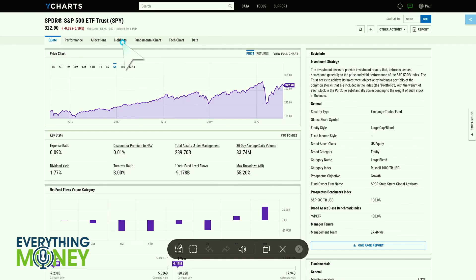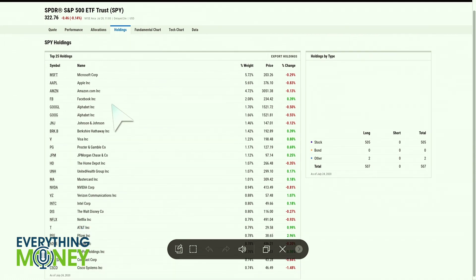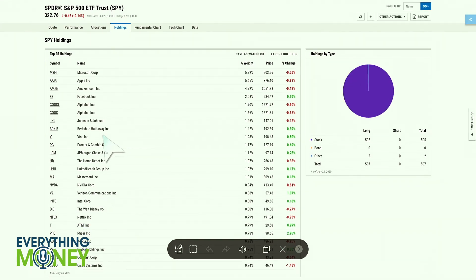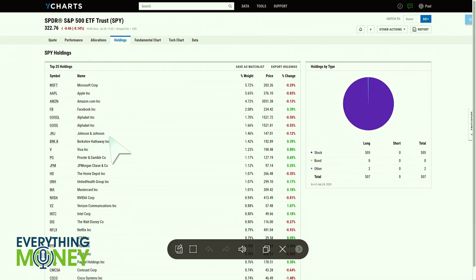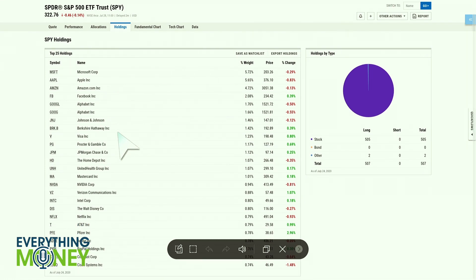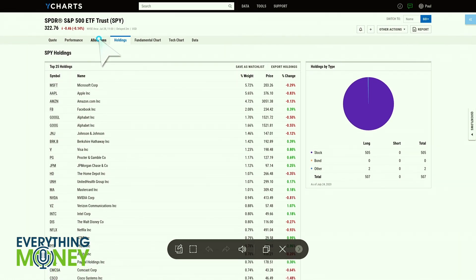So, look at the holdings here. All the companies. It tells you all the companies here. Top 25 holdings. It'll show you every single company in the S&P is in here.